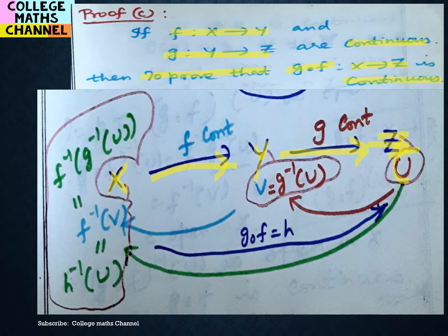Now, let U be open in Z. Since g from Y to Z is continuous and U is open in Z, g-inverse of U is open in Y. We can call this set V, so V equals g-inverse of U, and V is open in Y. Since f from X to Y is continuous and V is open in Y, f-inverse of V is open in X.